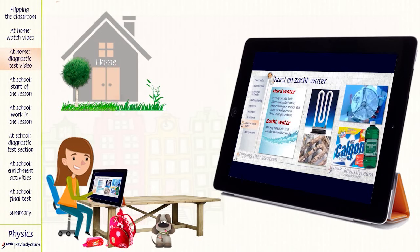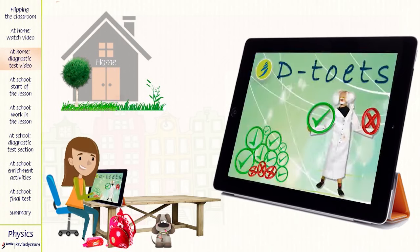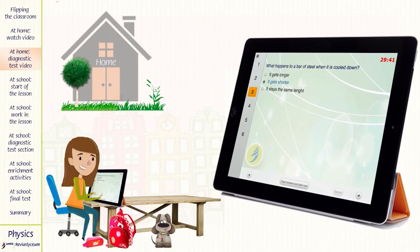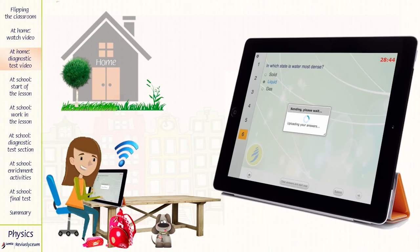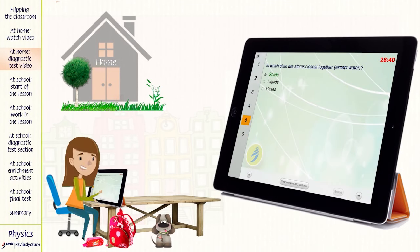After having watched the video, the pupils have to do a short digital diagnostic test about the content of the video. This test is embedded in their iBooks. It is meant for both the teacher and the pupils to check whether the pupils have understood the content of the video. When they have done the test, they send it to the teacher. Both pupils and teacher can see the results of the diagnostic test immediately. When the results of the test are poor, the pupils can watch the video again and write down what they haven't understood about the video and the diagnostic test.